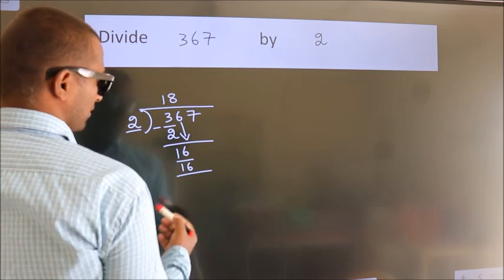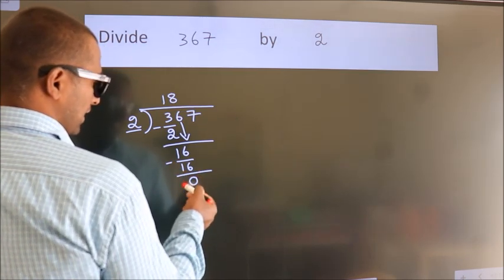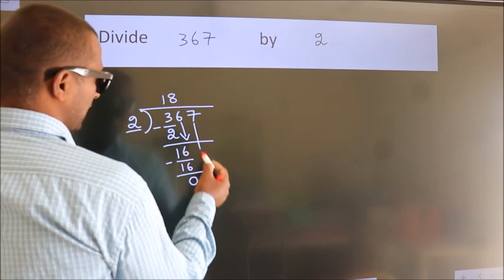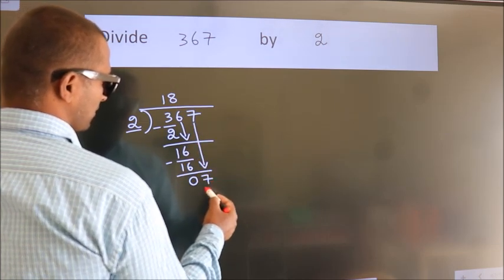Now we subtract. We get 0. After this bring down the beside number. So 7 down. So 7.